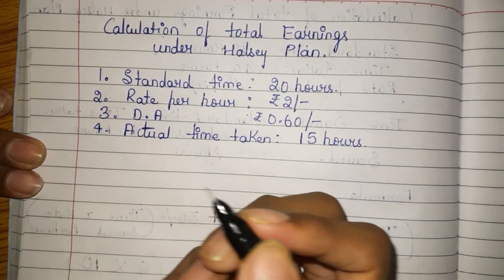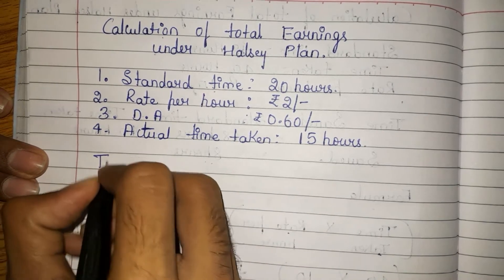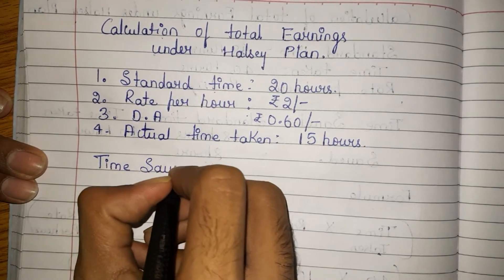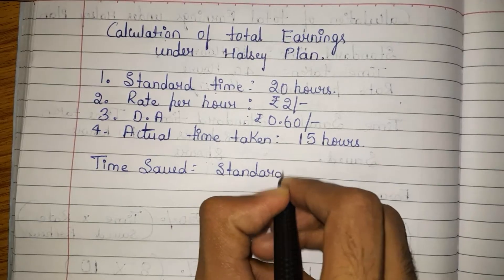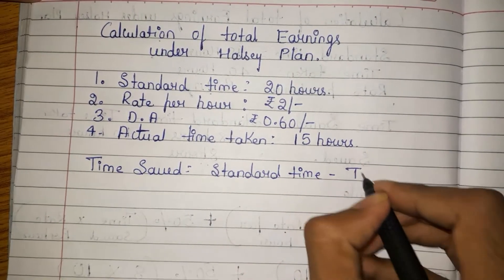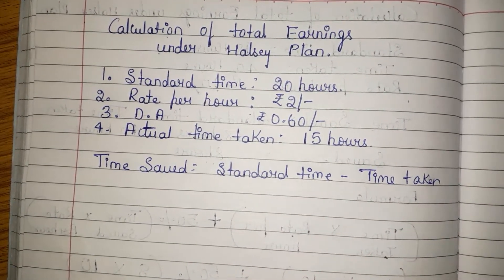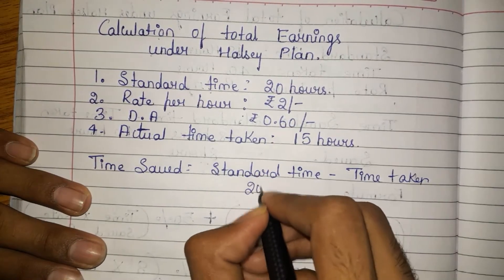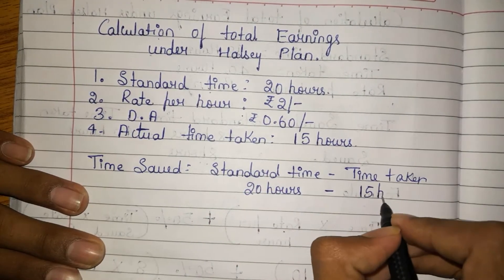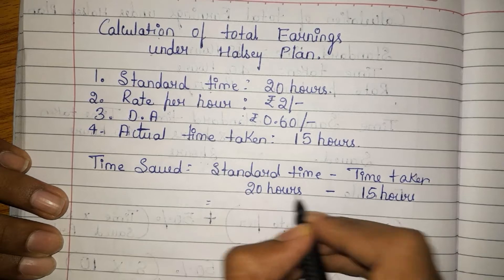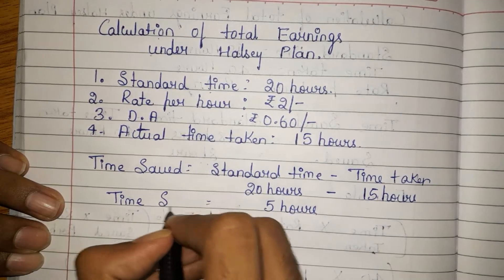First, always calculate the time saved. What is the formula to calculate time saved? It is standard time minus time taken. So standard time is 20 hours minus time taken of 15 hours — if you subtract, you get 5 hours. So the time saved is 5 hours.